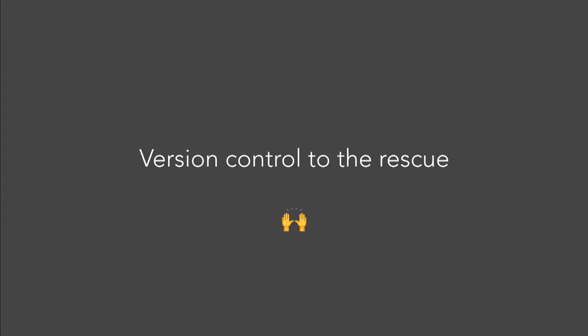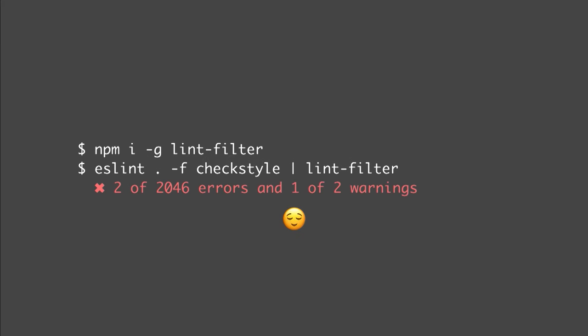Usually these days, most of us use version control, and version control knows what changes in our code bases. We can ask the version control if the line that the linter is referencing has changed, and then we can filter it, and we can get situations like this which are a bit more doable.